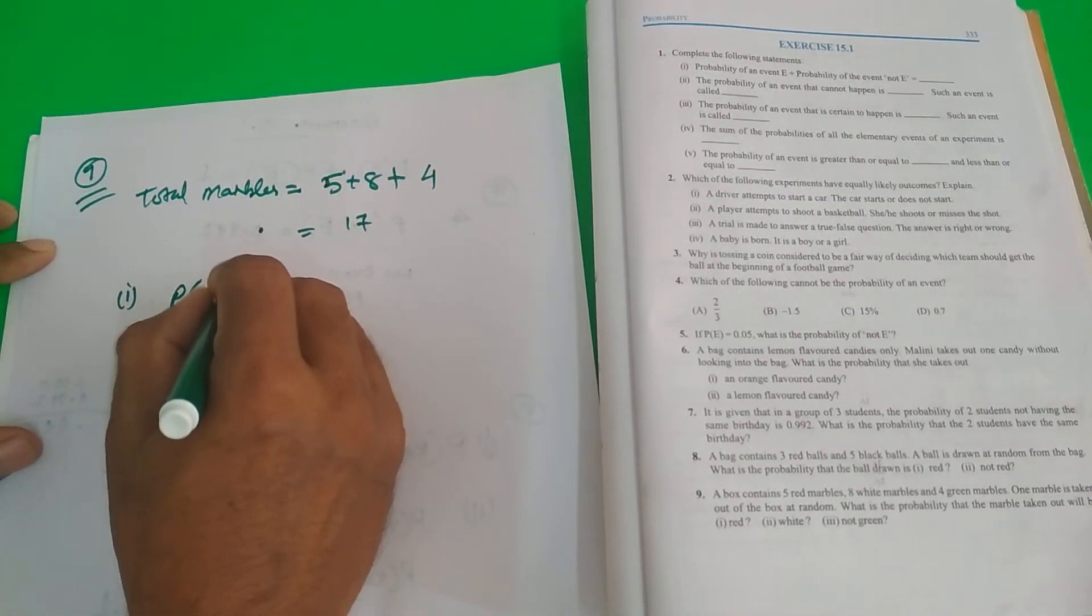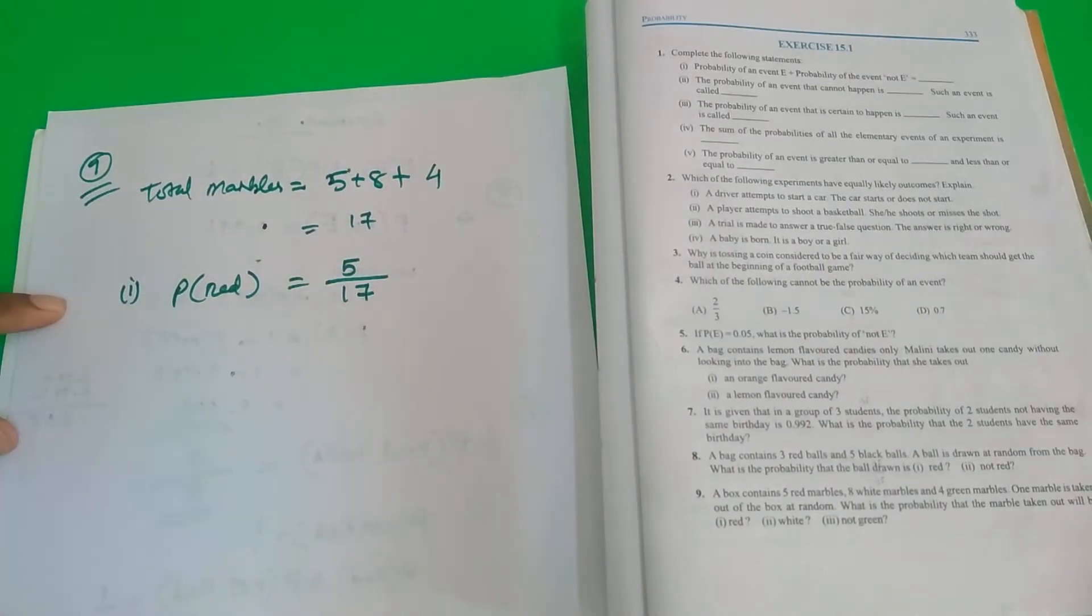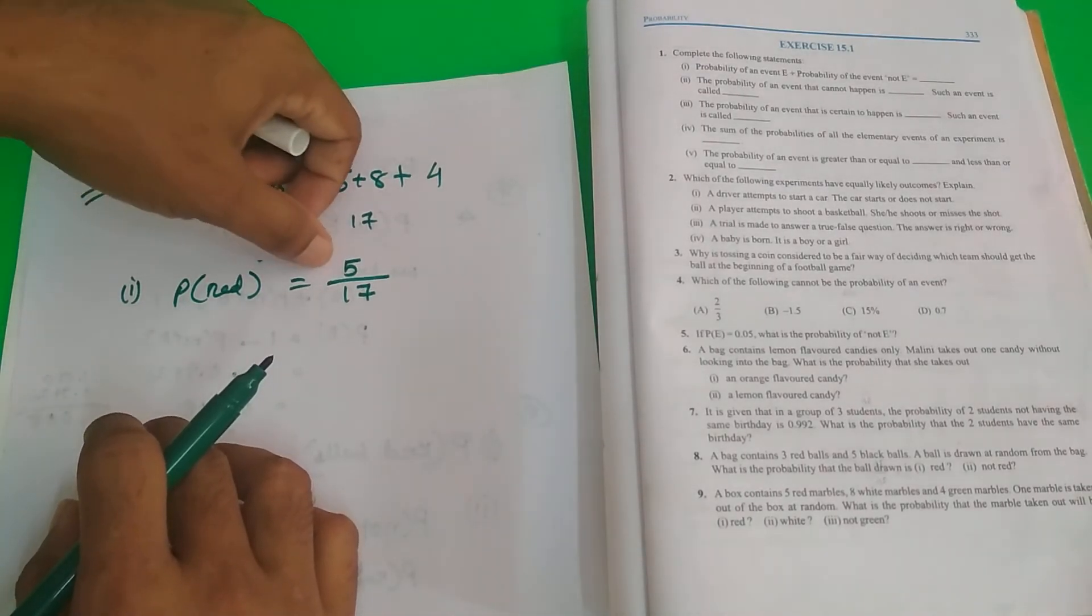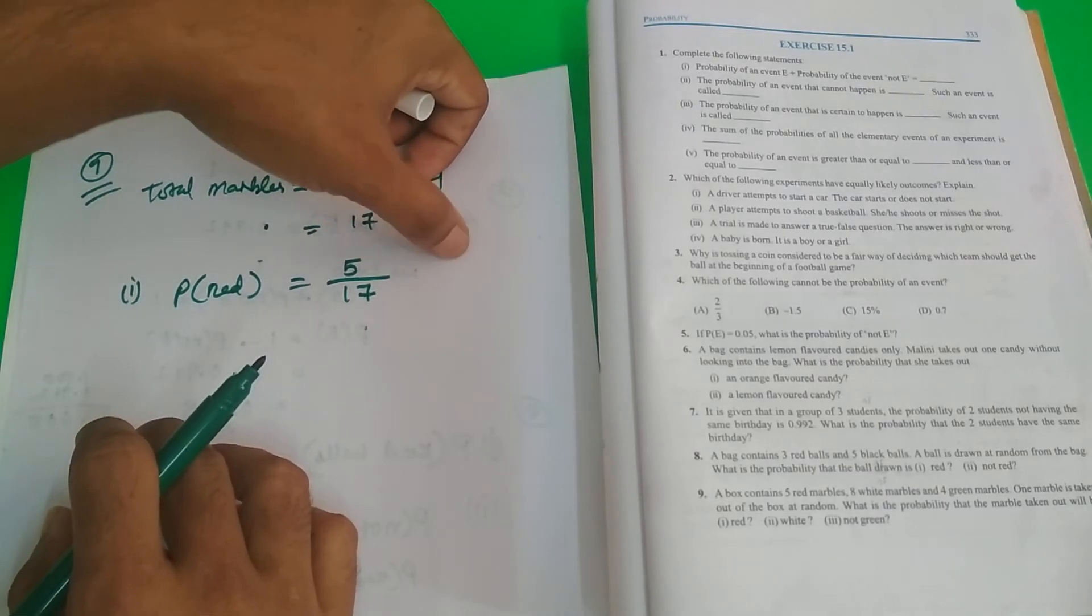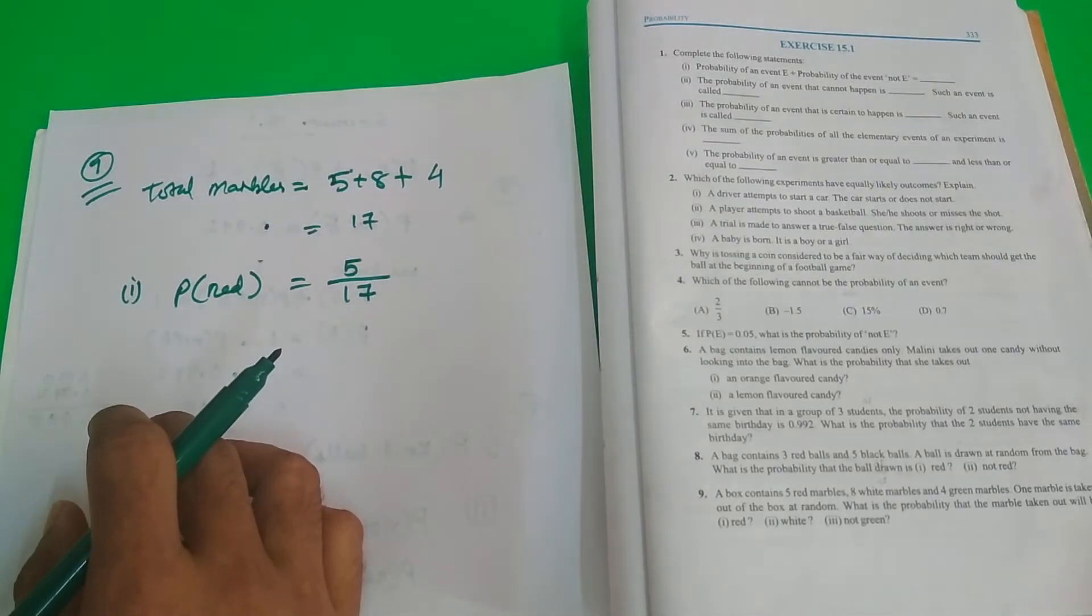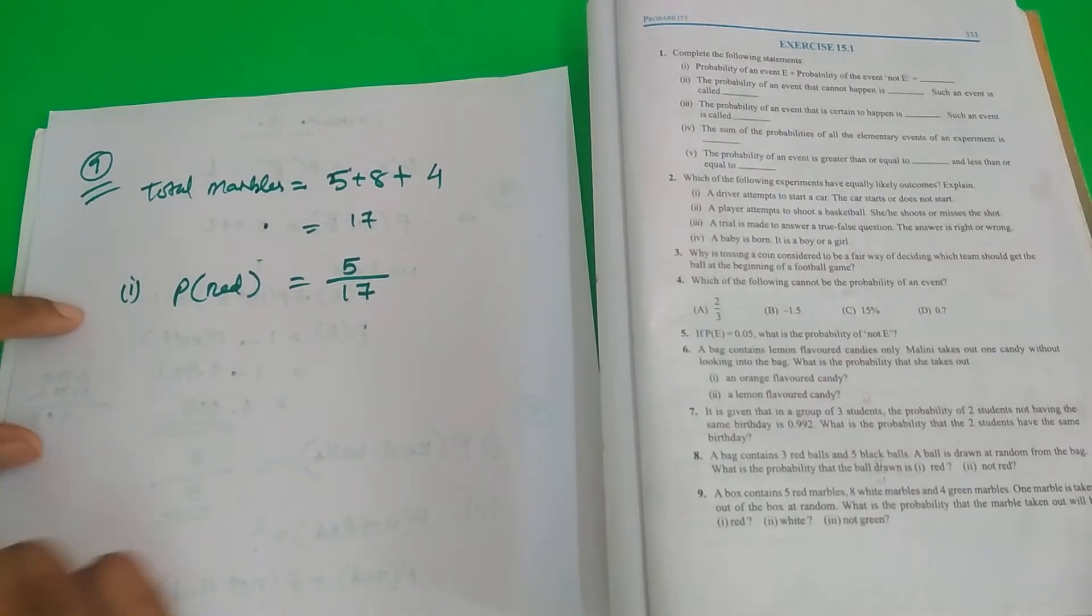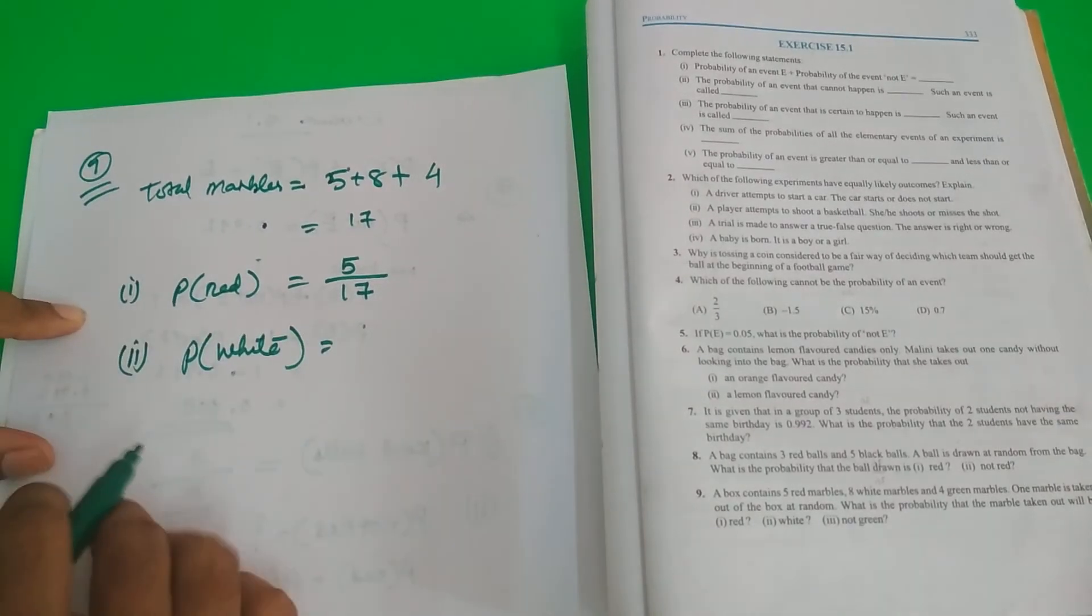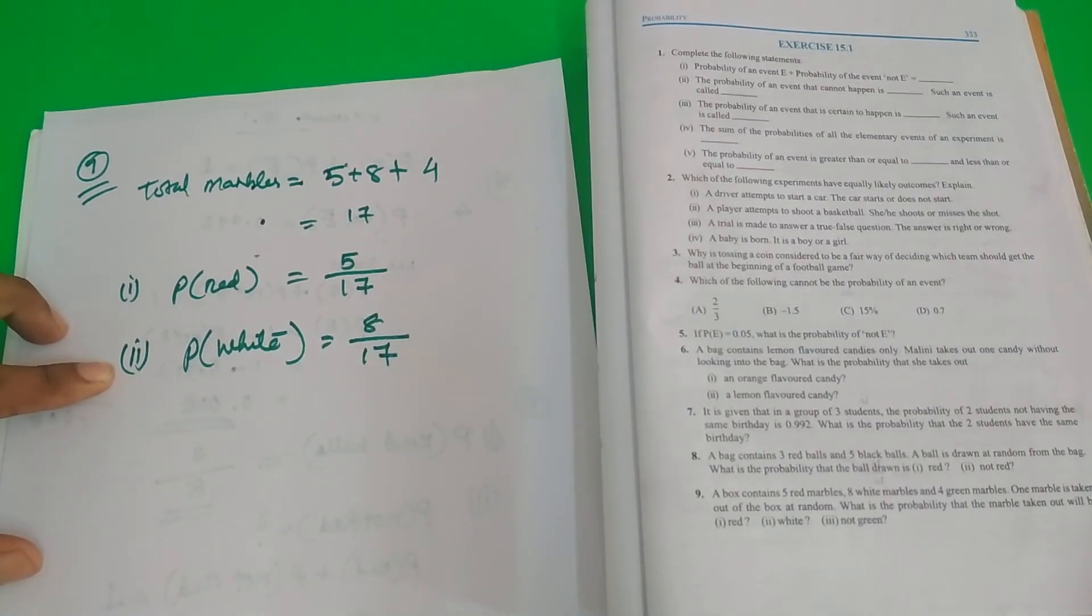Roman number 1. Probability of red. Simple. Red is 5 out of 17. You should write a complete step. Number of favorable conditions, favorable events, number of possible outcomes favorable for, if and red. Total number of possible outcomes. You should write the steps clearly. I am just for your explanation purpose doing it in this way. Roman number 2. Probability of white. How much is white? 8 out of 17. Simple.